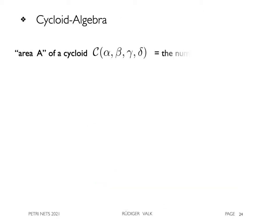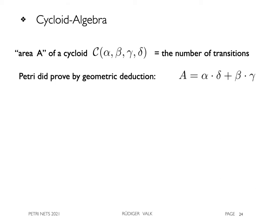A first hint to the existence of cycloid algebra, or what Petri called the area, which is the number of transitions of a cycloid. Petri did prove the formula alpha times delta plus beta times gamma by geometric deduction.